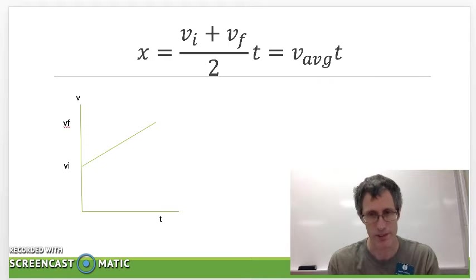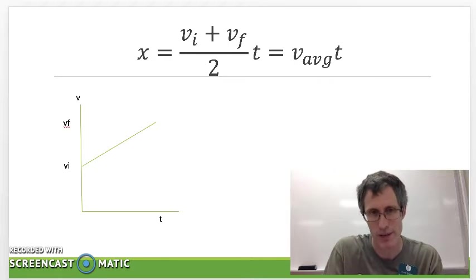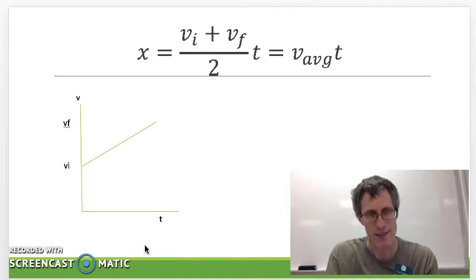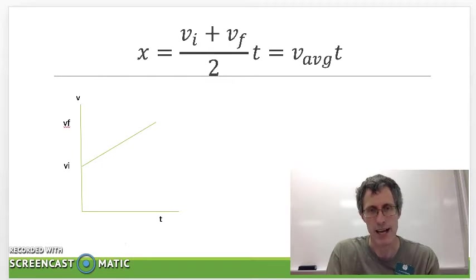And I've put up a little sample graph of an accelerated motion, initial velocity, a final velocity, and it reaches that final velocity after some time t. Now graphically we can find the distance by figuring out the area under the curve.